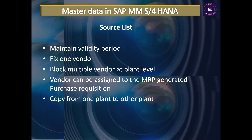In source list, we are maintaining the list of suppliers for a particular material. For example, suppose there is a laptop supplied by 10 suppliers — one laptop but 10 suppliers. We maintain the list of all those 10 suppliers against that material. We can maintain a validity period, meaning which supplier can supply during which dates. Out of 10 suppliers, we can fix one and block multiple vendors at the plant level.